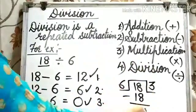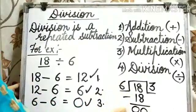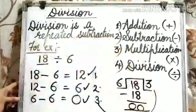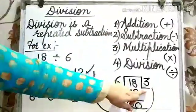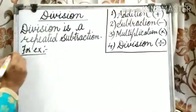8 minus 8, 0. 1 minus 1, 0. So, see, here the answer is 3. Let's solve one more example.